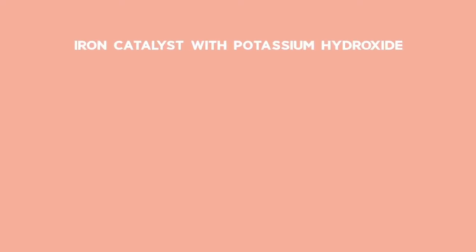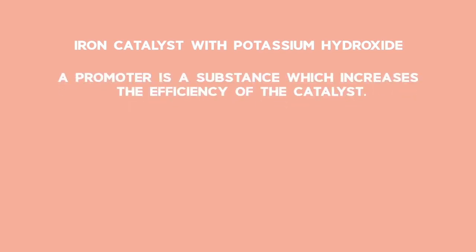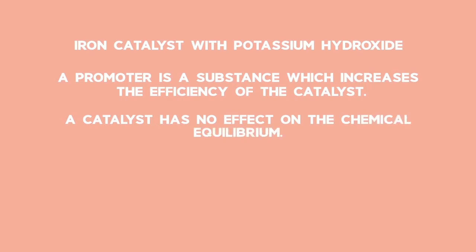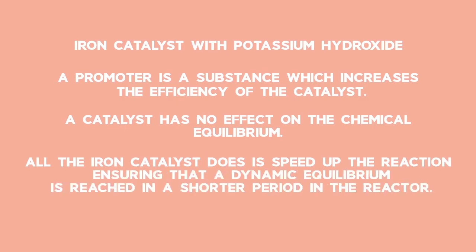Firstly, let's look at the catalyst used. The catalyst used is an iron catalyst, which has potassium hydroxide added to it as a promoter. A promoter is a substance which increases the efficiency of the catalyst. A reminder that a catalyst speeds up a reaction without participating in the reaction. The catalyst has no effect on the chemical equilibrium — all that the iron catalyst does is speed up the reaction, ensuring that a dynamic equilibrium is reached in a shorter period in the reactor.